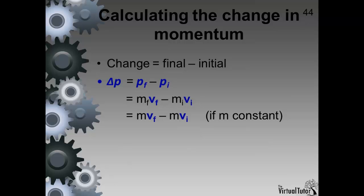If the mass of the object remains unchanged, then the initial mass equals the final mass. If we take m out as a common factor, we get another form of the equation used to calculate the change of momentum of an object.